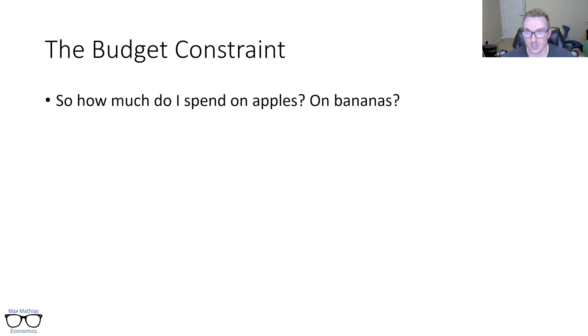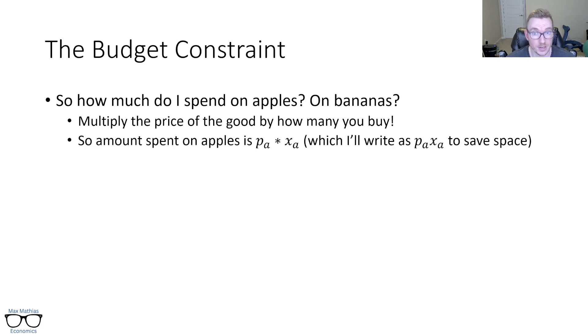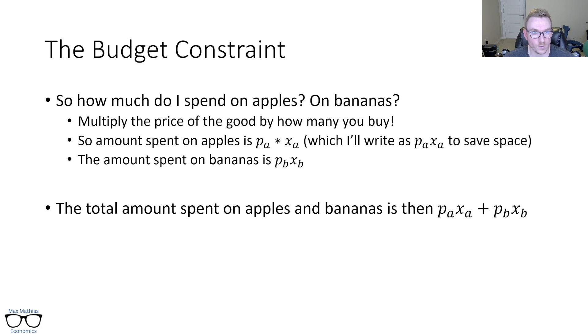So how much do I spend on apples and how much do I spend on bananas? Well, if you go to a store, how do you calculate how much you spend on something? You multiply the price of the good by how many you buy. So if apples cost $2 each and I buy 10 of them, I've spent $20 on apples. So the amount spent on apples is that price P_A times X_A. I'll eliminate that multiplication symbol. So I'll write it as P_A X_A just to save space, but know that is a multiplication. Likewise for bananas, it's P_B times X_B. Price of bananas times how many bananas you buy.